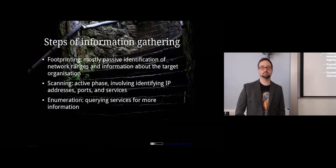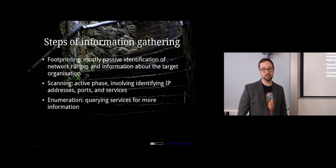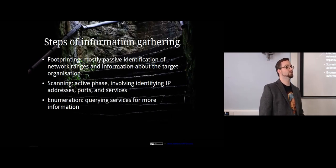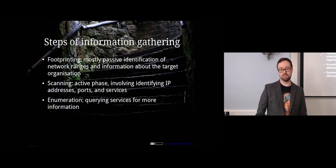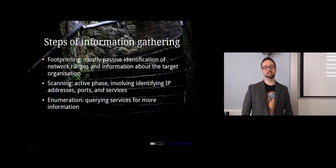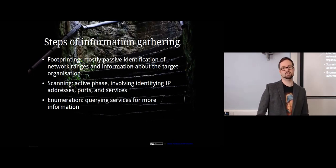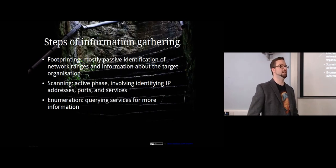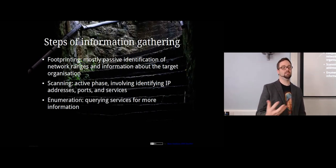To break those steps up: footprinting is mostly passive — identification of network ranges and information about the organization. Scanning is mostly the active phase where you're actually identifying IP addresses, finding ports and services. Enumeration is the next stage where you've got that information and start talking in more detail to those services to see what other information you can extract.